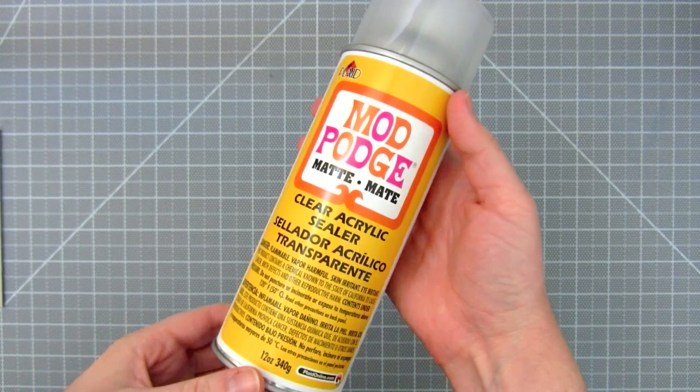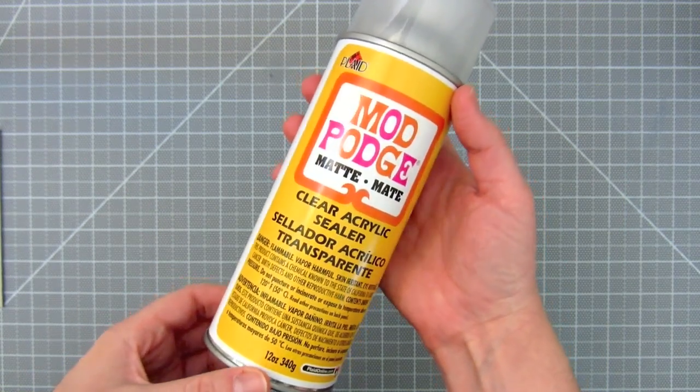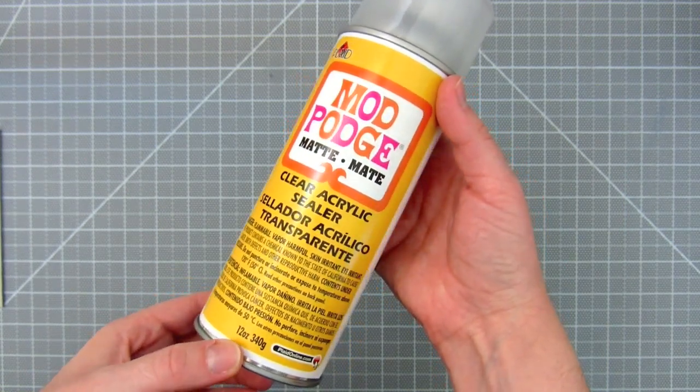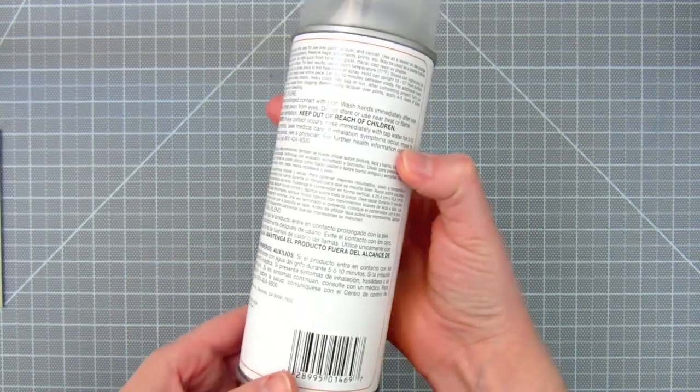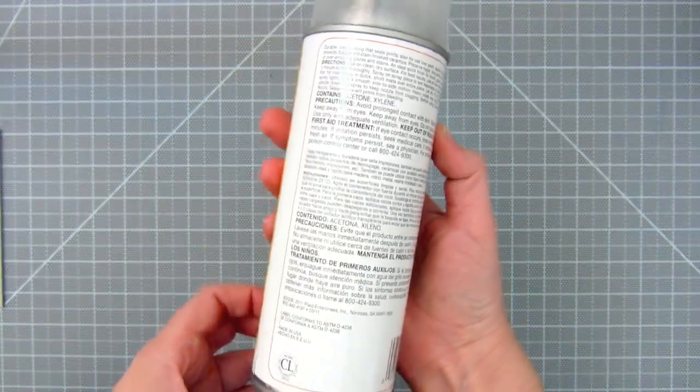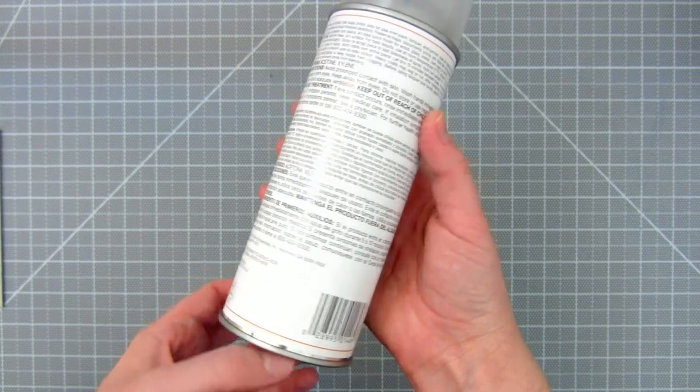To seal the case, I'm using this Mod Podge clear acrylic sealer. You want to protect your case, so don't skip this part. The glue alone is not enough because it will remain a little tacky and this spray will put a clear hard coat on your case.